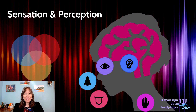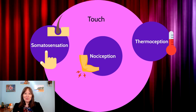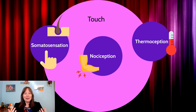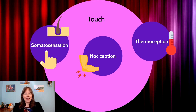We're still talking about sensation and perception, and now we're going to discuss our sense of touch. Our sense of touch might surprise you — it's actually at least three different sensory systems: our somatic sensation system, which is the sense of touch and contact with the skin; nociception, which is the sensation of pain; and thermoception, which is the sensation of temperature.